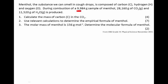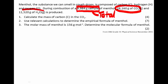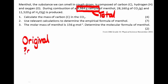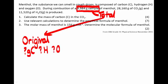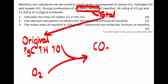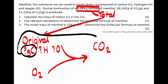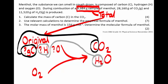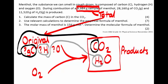During combustion of a 9.984 gram sample of menthol — that's the total mass of the original compound — we get a certain mass of carbon dioxide and water produced. The original compound consists of a certain mass of carbon, hydrogen, and oxygen. This burns in oxygen to form carbon dioxide. All the carbon in the original compound ends up in the carbon dioxide, and all the hydrogen ends up in the water. But not all the oxygen in the products came from the original compound — some came from the air.